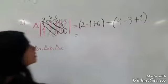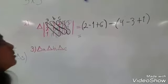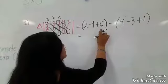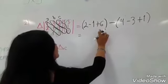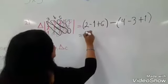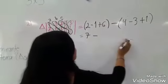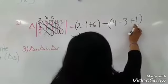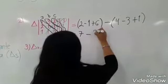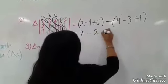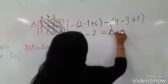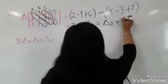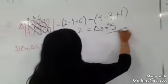Para más fácil, primero vamos a usar los términos que son iguales: 2 más 6 son 8, menos 1, 7. Menos 4 más 1, 5. Menos 3, 2. Entonces el determinante del sistema es igual a 7 menos 2, que es 5 positivo.